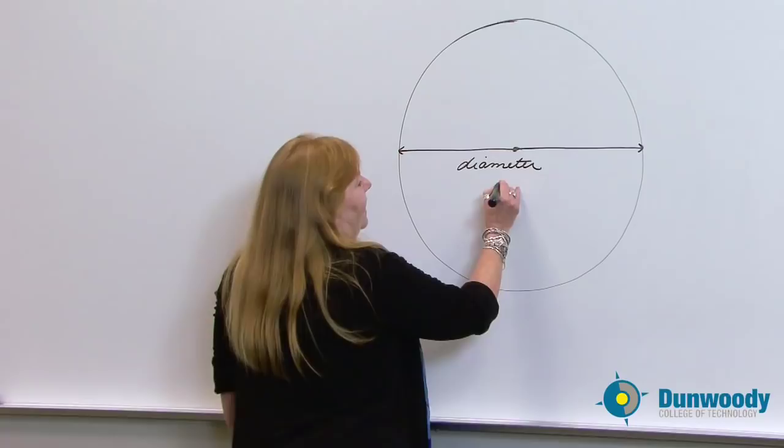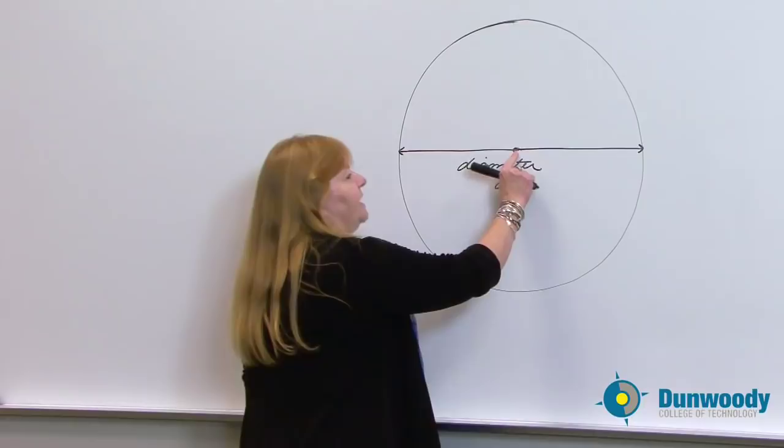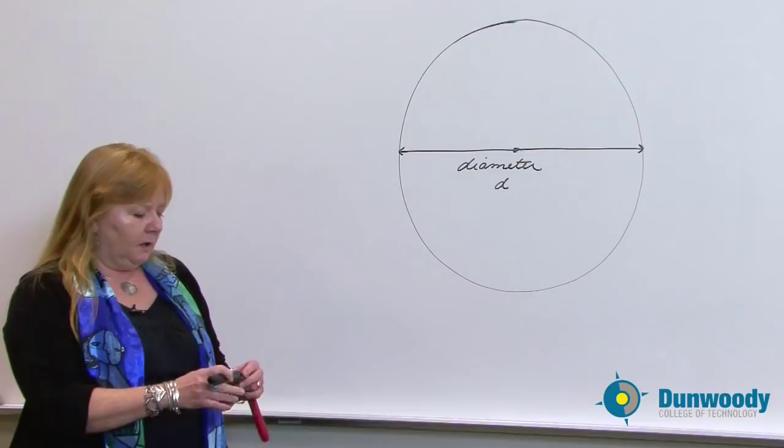In math we use a small d to represent diameter. So again, diameter is the longest distance through a circle. And that means you always have to go through the center of the circle to the other side to represent diameter.